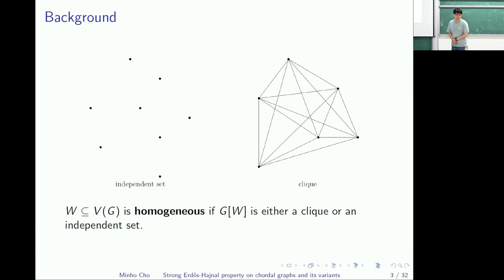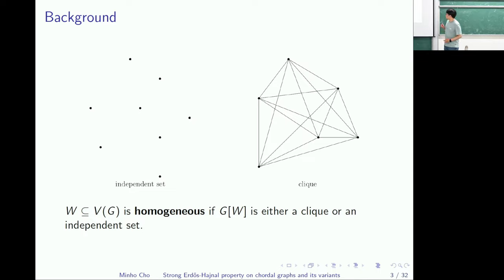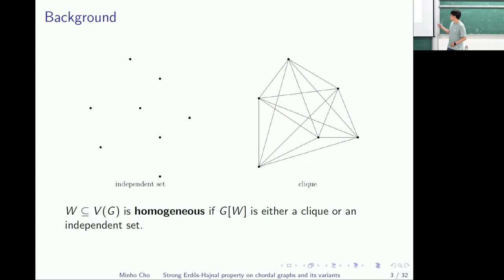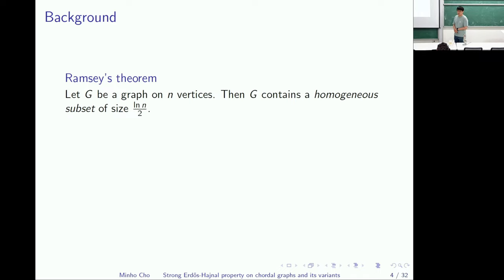The Erdős-Hajnal property belongs to the topic of Ramsey theory. The center of Ramsey theory concerns homogeneous subsets, meaning either an independent set or a clique — vertices forming an independent set or clique in a given graph. I'll call a clique or independent set simply a homogeneous subset.